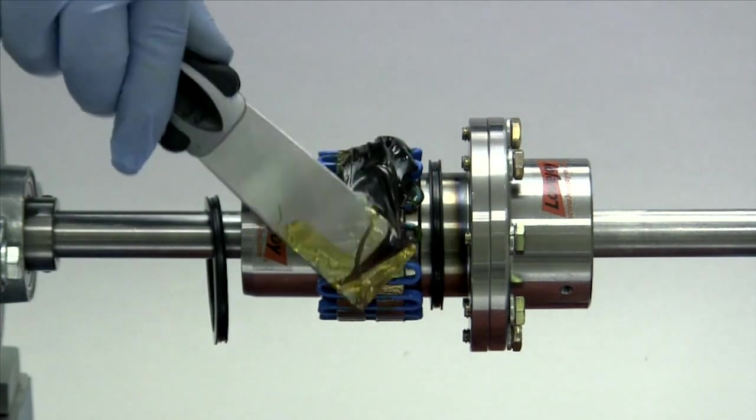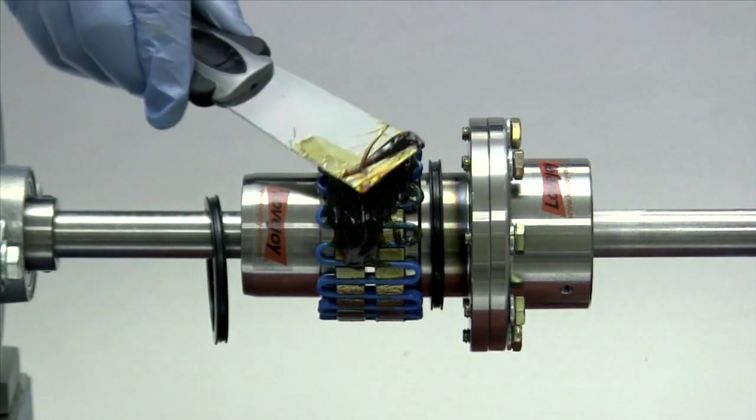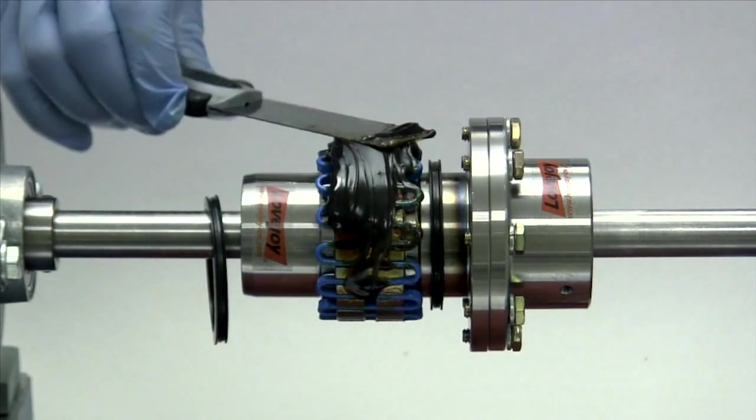When the grid spring is completely seated, take a putty knife, preferably one with a soft blade, and smear the remaining grease around the outside of the grid spring.